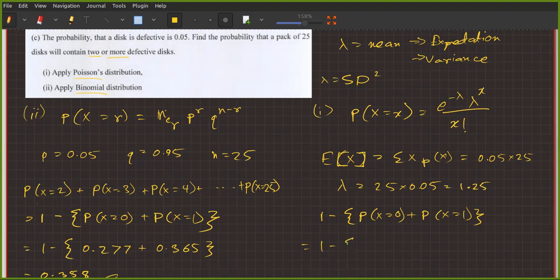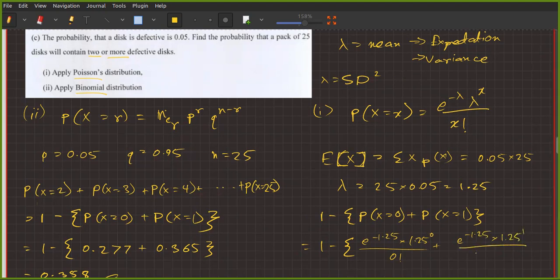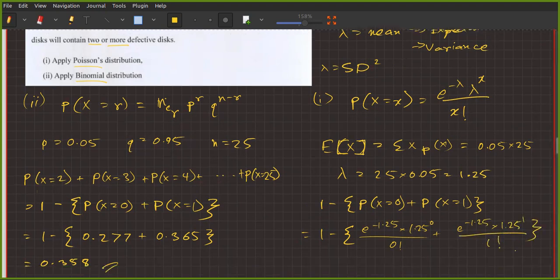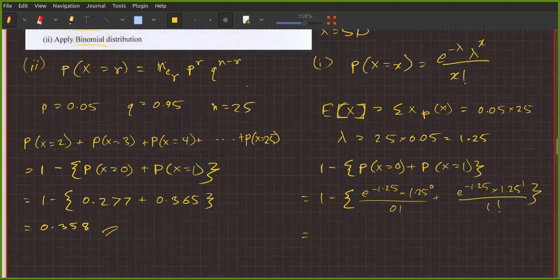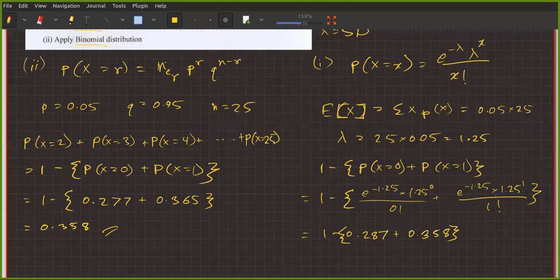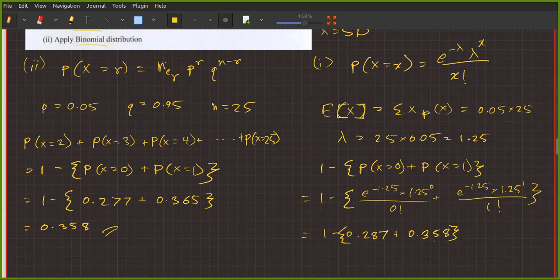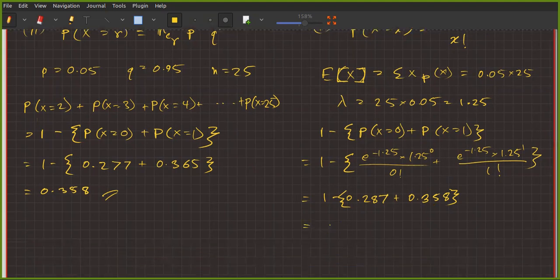So 1 minus P(X=0), which is e to the power minus 1.25 times 1.25 to the power 0 divided by 0 factorial, plus e to the power minus 1.25 times 1.25 to the power 1 divided by 1 factorial. When you calculate this, it equals 1 minus 0.287 plus 0.358, which equals 0.355.